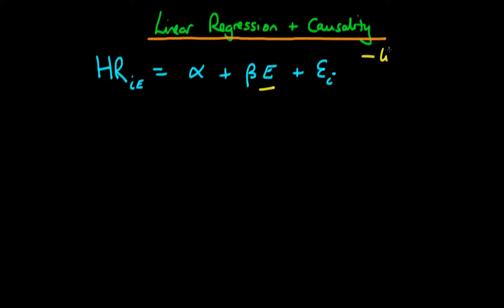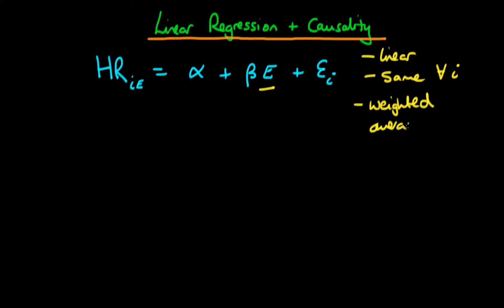We've assumed this relationship is linear and the same for all individuals. We don't have to make these assumptions — we can assume the potential resting heart rate is non-linear and differs between individuals, which makes the analysis more complicated. But in both cases, regression ends up representing some weighted average of the causal effect of interest. I'll proceed with the linear and homogeneous assumption.